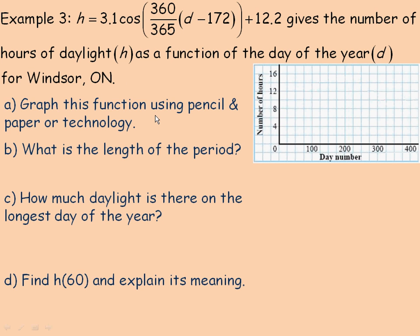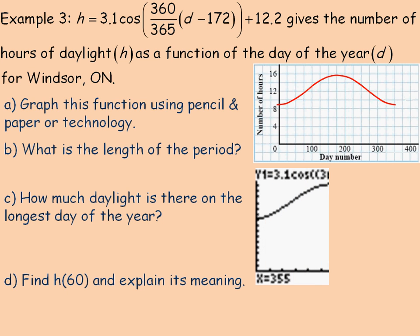We're going to graph this using pencil and paper and also show you some technology as well. To graph it using pencil and paper, I would make up a table of values and substitute perhaps 0, 100, 200, and 300 days, those kinds of numbers in place of d, and find the number of hours of daylight in those days. And if you do that, this is what the graph looks like. It is certainly a sinusoidal function. If we were to plug that formula at the top of the page in the graphing calculator, this is the image we would get, same as the one above.